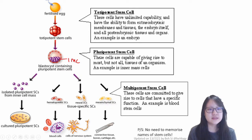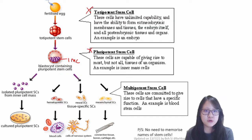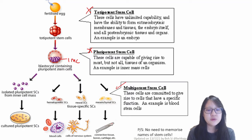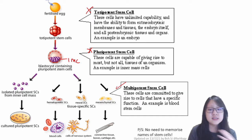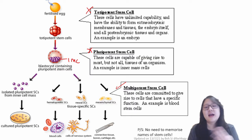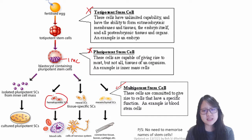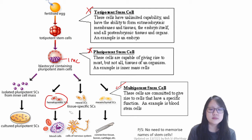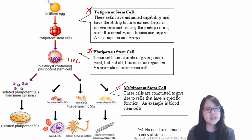How about multipotent stem cells? As adults, as fully formed human beings, we don't have totipotent and pluripotent stem cells anymore. We have multipotent stem cells only. These cells in us right now are committed to give rise to cells that have specific functions. For example, we have blood stem cells, also called hematopoietic stem cells, and they can give rise to a range of different cells — red blood cells, different kinds of blood cells. However, a hematopoietic stem cell cannot simply differentiate into a nerve cell. It's tissue-specific, but this is what we have right now.